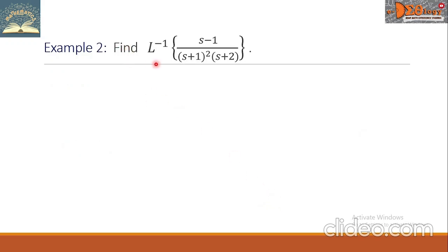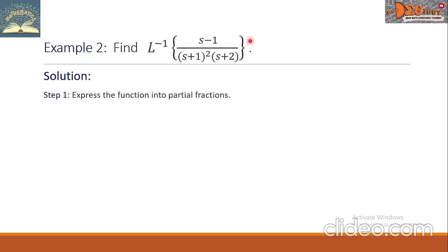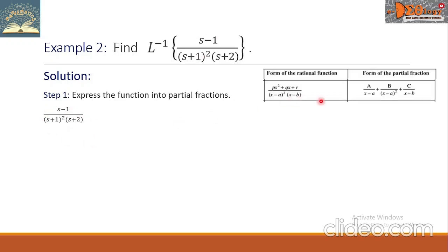Example 2. Find the inverse Laplace of (s − 1) all over (s + 1)² times (s + 2). Step 1: let us express the function into partial fractions. Observing the denominator, it falls in the repeated linear factor category, giving us a/(s+1) + b/(s+1)² + c/(s+2). This is equation 1.